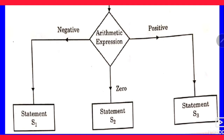Depending upon the value of the arithmetic expression: if the arithmetic expression value comes out negative, control will be passed to statement number s1. If it comes out zero, control will be passed to statement number s2. And if the value of the arithmetic expression is positive, control will be passed to statement s3.